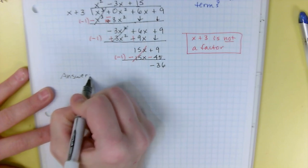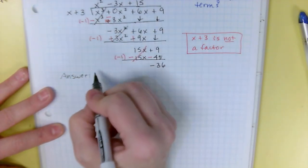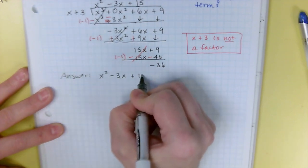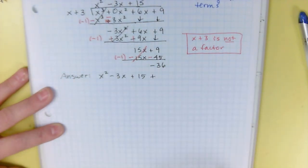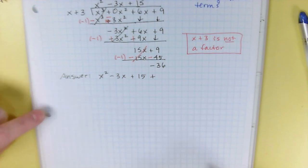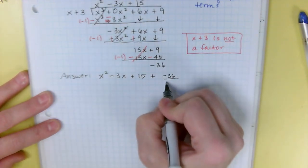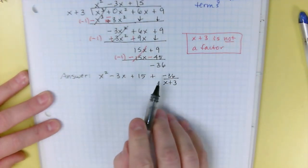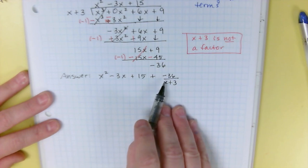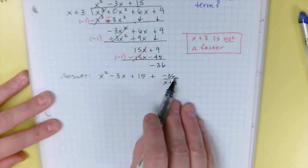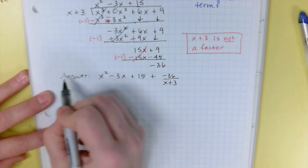So we have a remainder, which means x plus 3 is not a factor. How do we write an answer that has a remainder? We use that fraction form. Your answer is your quotient — x squared minus 3x plus 15 — plus, and be sure you put that plus in there, the remainder which is negative 36, over the divisor which is x plus 3. The reason I want you to put the plus in here is that eventually your remainders will have more than one term, and if you put the negative in front of the fraction it makes the remainder incorrect.